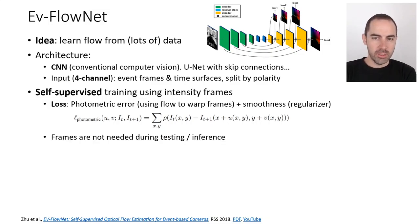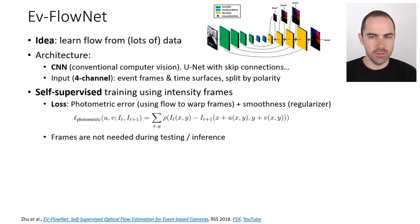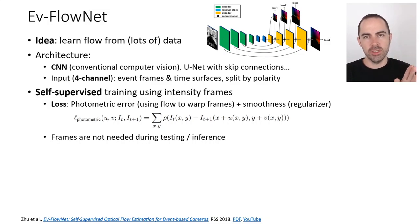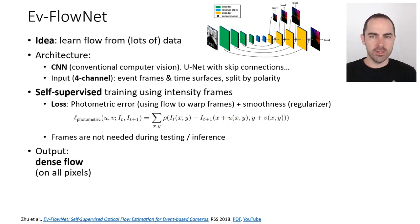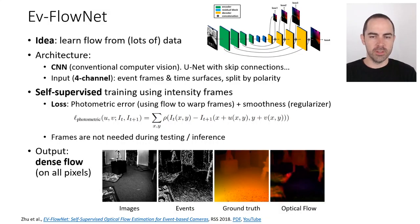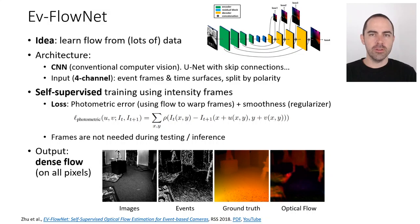A smoothness regularizer guides the solution toward a plausible one. These frames are needed only during training, not during testing or inference. At inference time, you just take the events, convert them into the four-channel representation, pass it through the network, and the network produces a dense flow on all pixels.